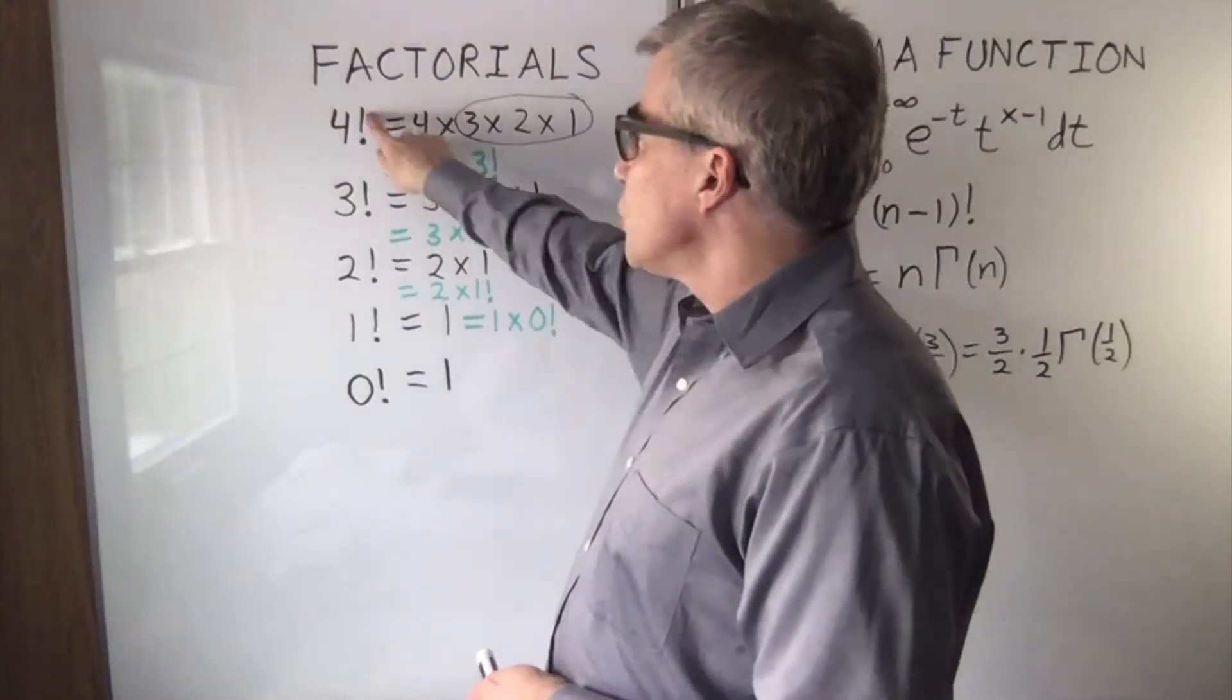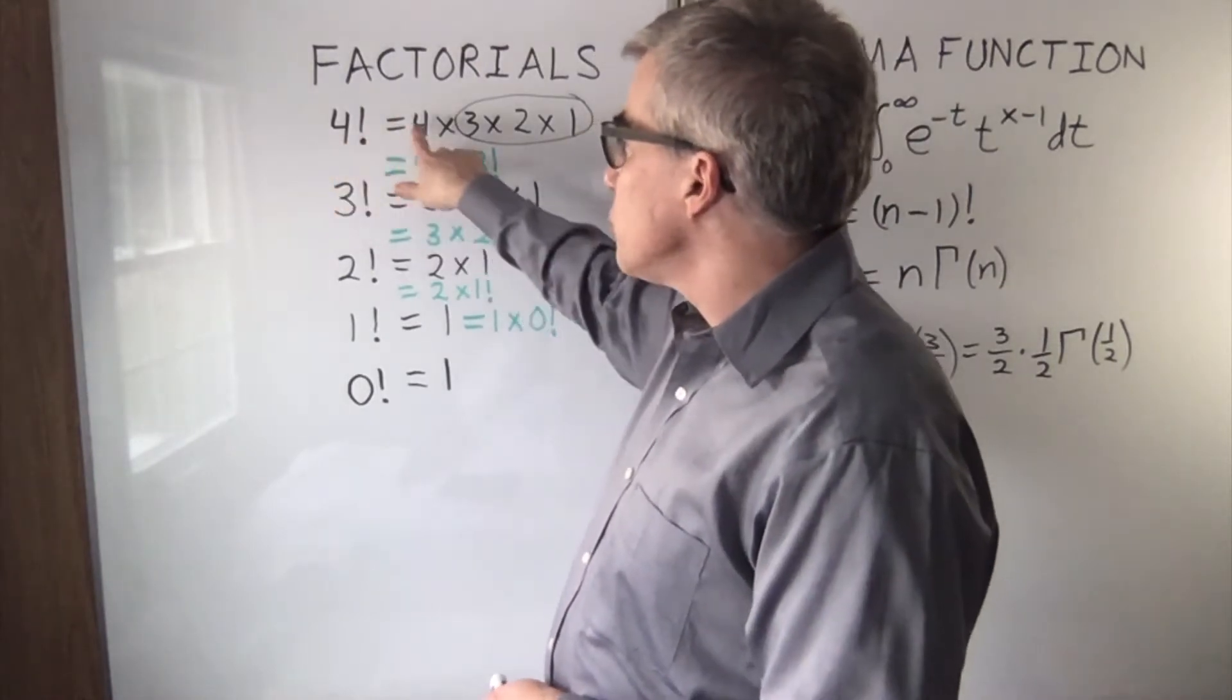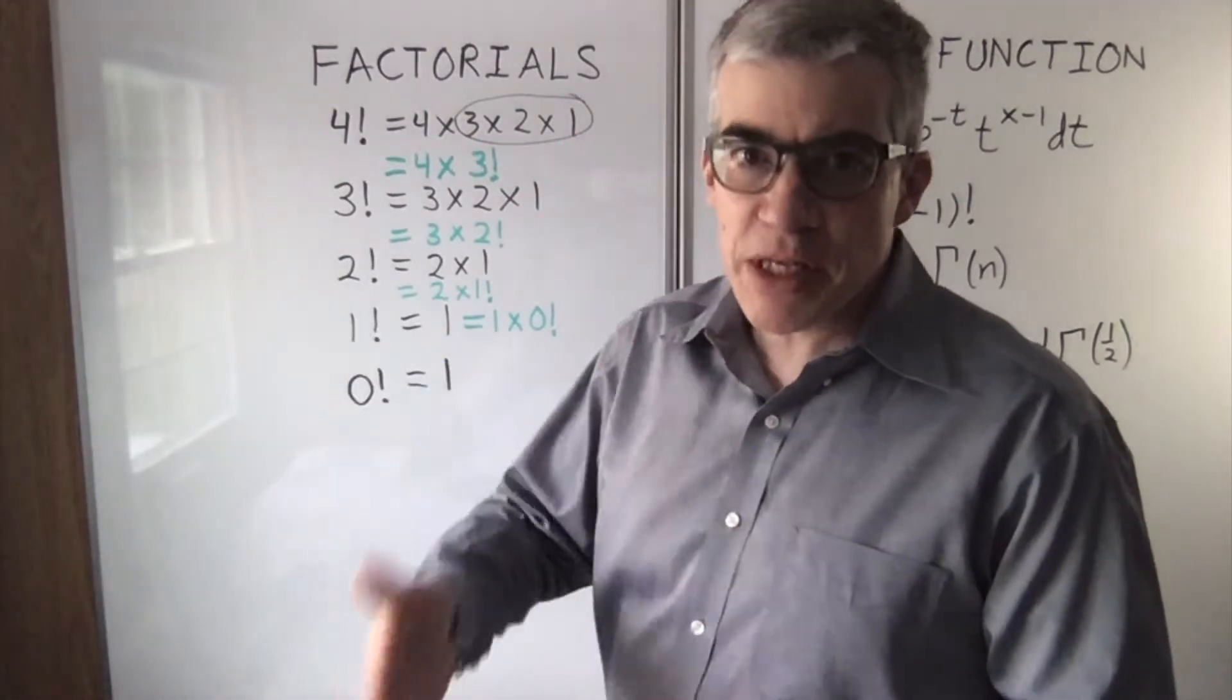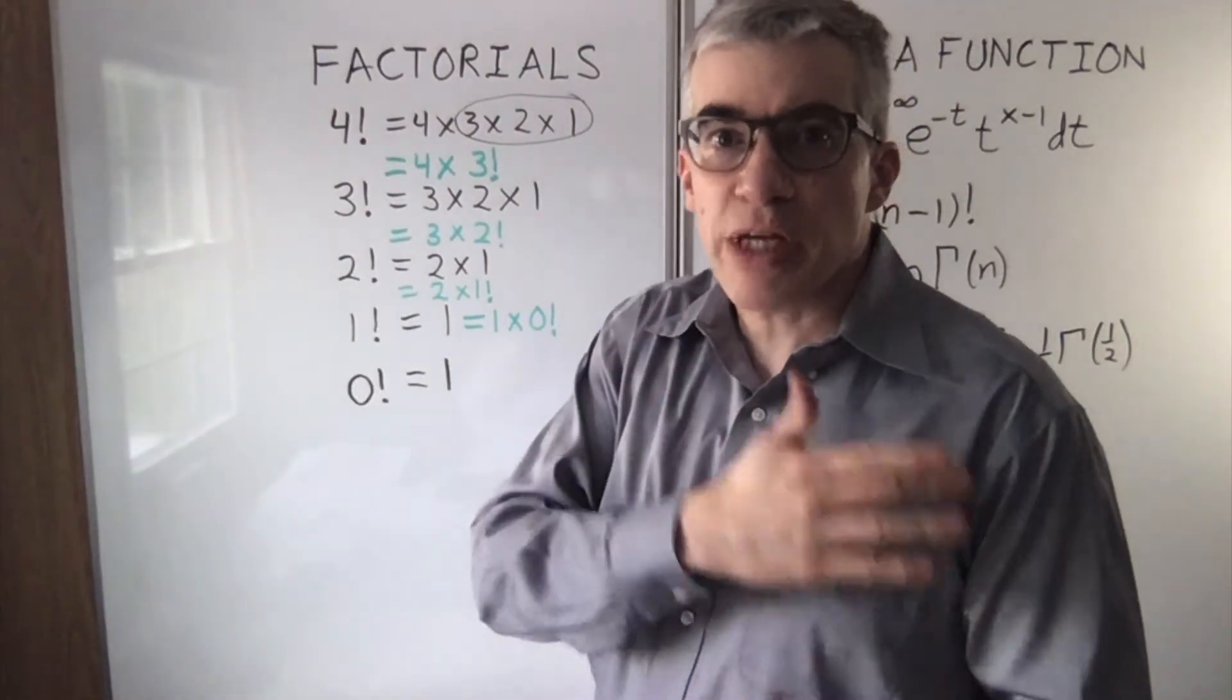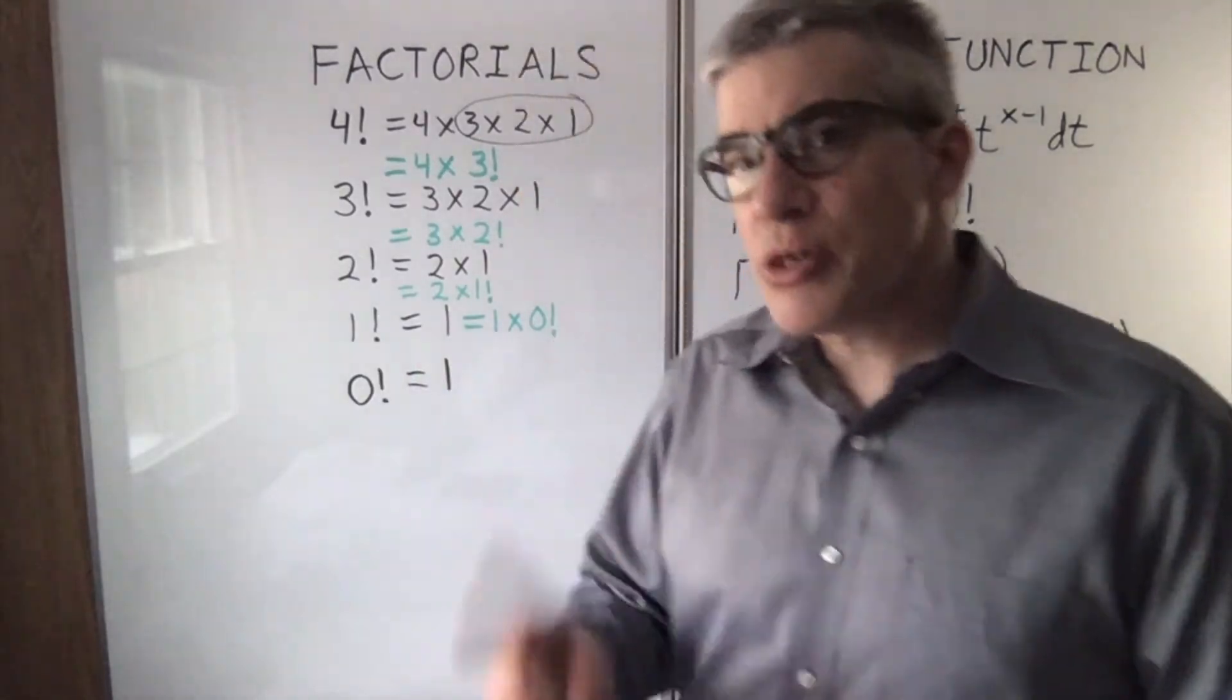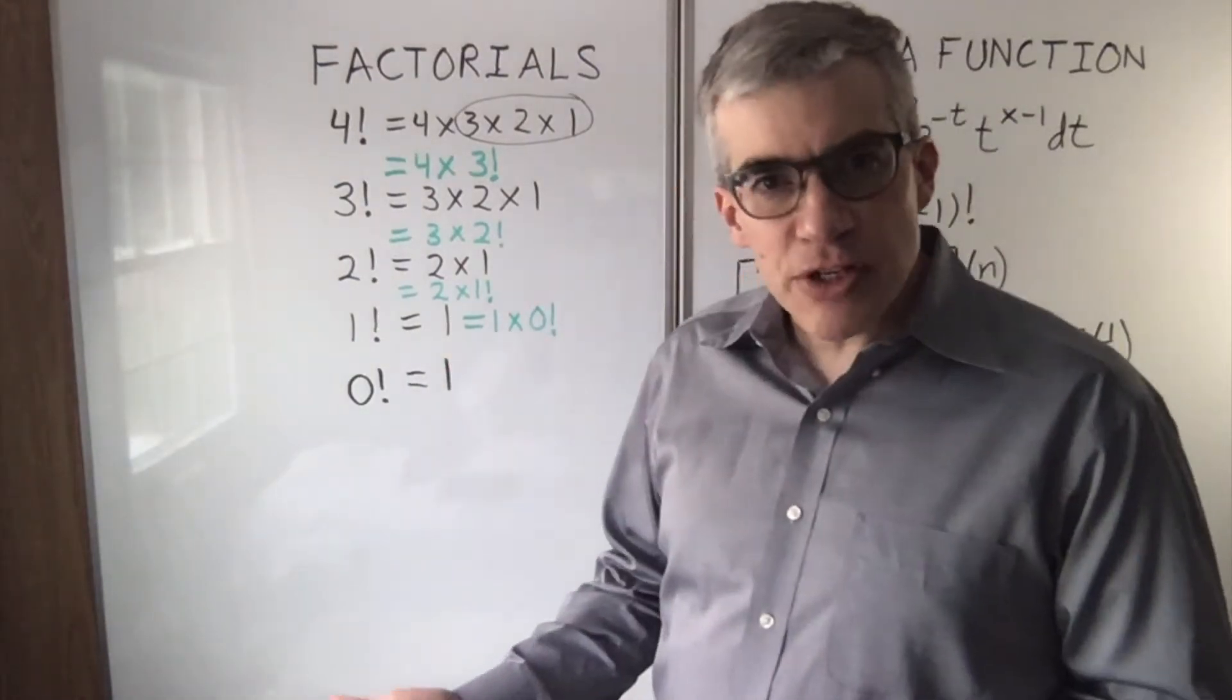To take a factorial, you put an exclamation point after the number, and for 4 factorial it would be 4 times 3 times 2 times 1. 7 factorial would be 7 times 6 times 5 times 4 times 3 times 2 times 1, and so forth. 1 factorial would be just 1. 0 factorial, it turns out you can define to be 1, but it doesn't extend to negative integers.